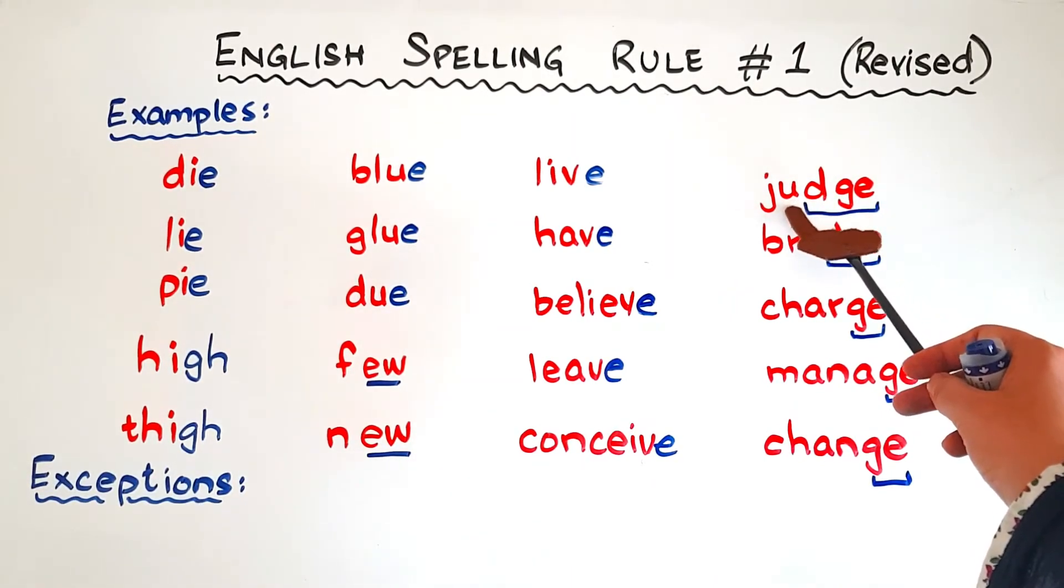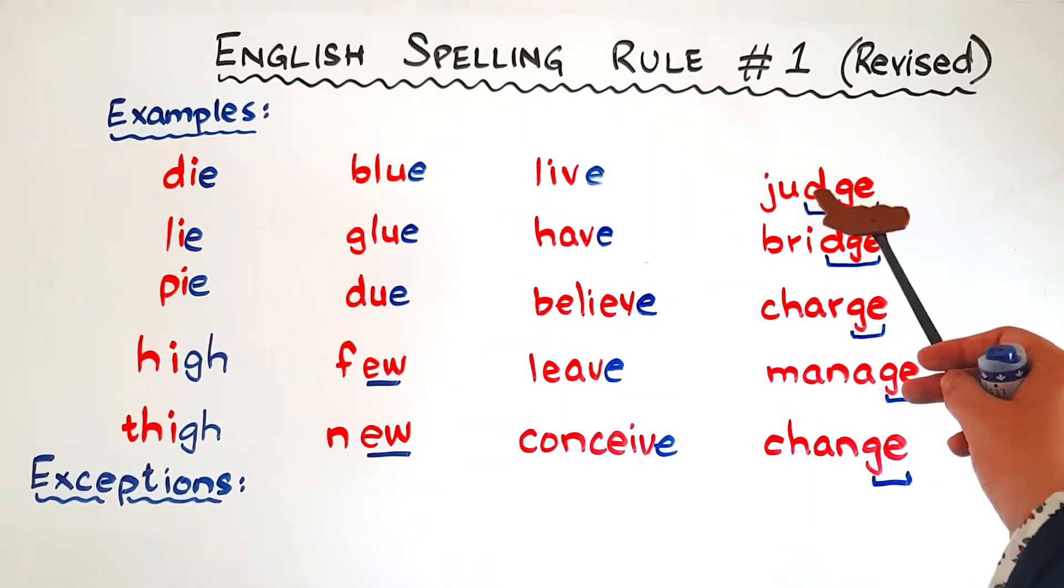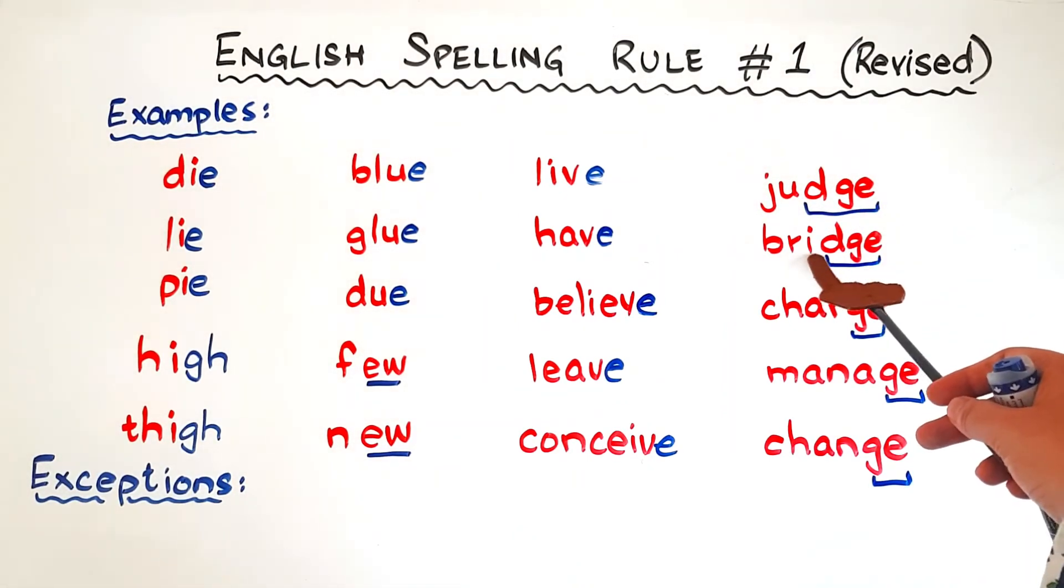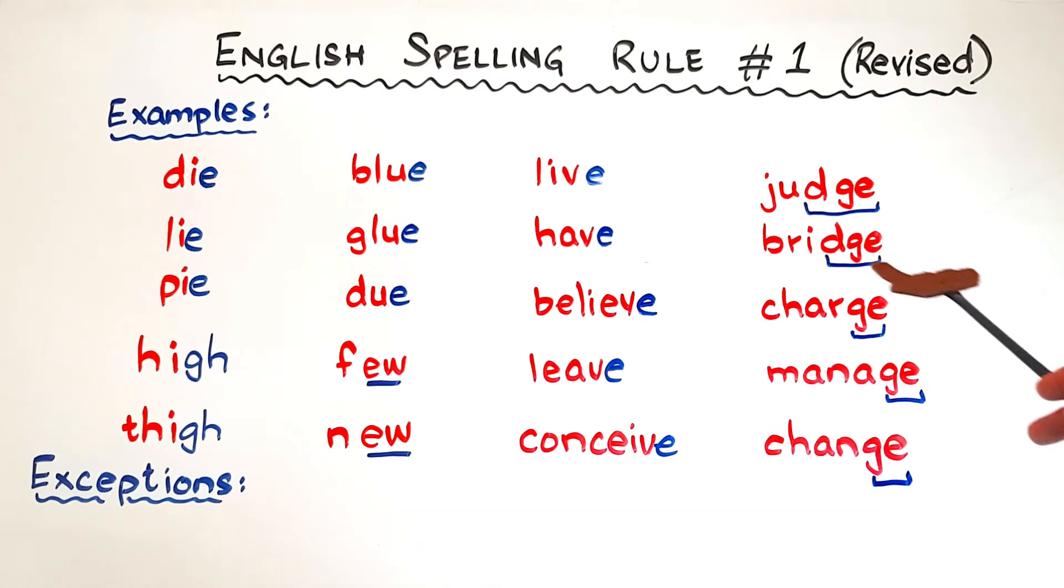We are using some alternative spellings to write the J sound of letter J. After a single short vowel, we use a trigraph that is D, G, E. If you want to learn about this, again, please have a look at the description box. You will find the videos related to these rules. This is again a single short vowel. So we have written D, G, E for the J sound. In charge, manage, and change, we have put the J sound only with G, E. G, E and G, I can also say the J sound.